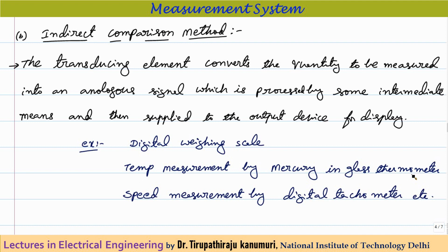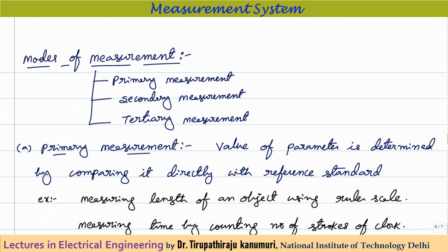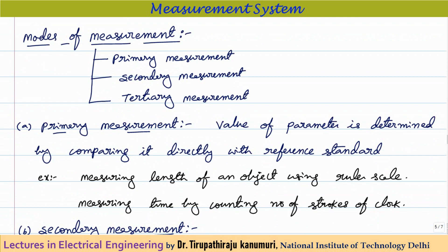Another example of indirect measurement is temperature measurement using a mercury-in-glass thermometer: the temperature is converted into expansion of mercury, which you then read. Similarly, speed measurement using a digital tachometer is indirect — the rotating shaft drives a small DC generator, and the voltage generated depends on the rotor speed. That voltage is measured by a voltmeter whose scale is calibrated to indicate rotor speed.